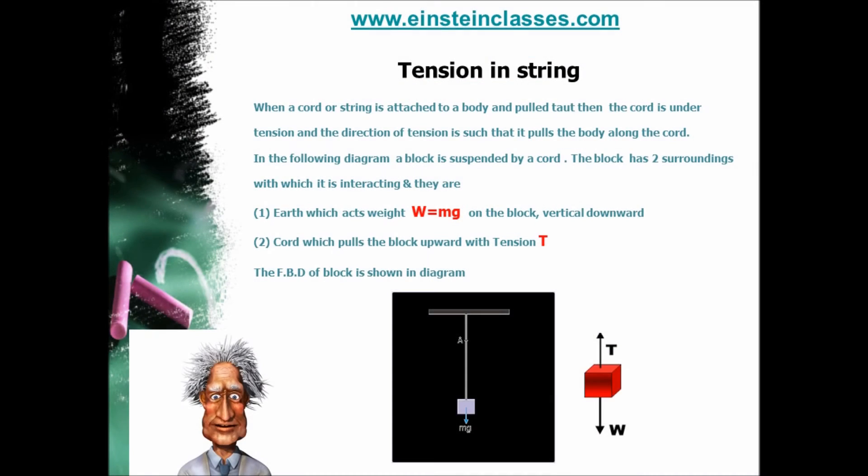Now take another type of example. You can see a block or any object is suspended by a light cord known as string. Think, what are the forces acting on the block? Yes, you are right. One force is the weight of block as shown in FBD of block. The other force is tension which is acted by string in upward direction. Tension is a pulling force. It acts along the cord such that the cord pulls the body along the direction of pulling.